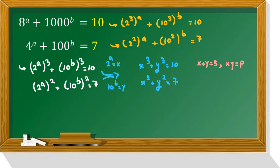We use two identities. You should memorize them. The first one is x cubed plus y cubed equal to x plus y whole cube minus 3xy times x plus y. x plus y cubed is s cubed minus 3ps equal to 10.